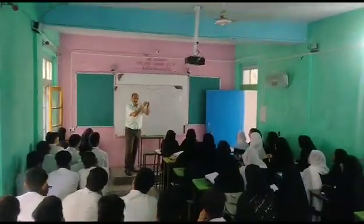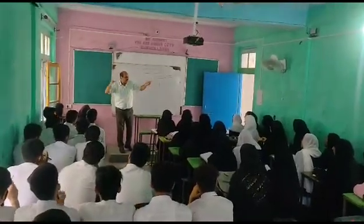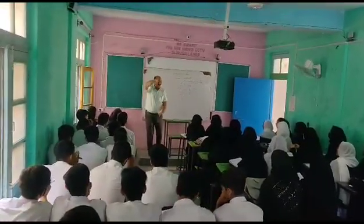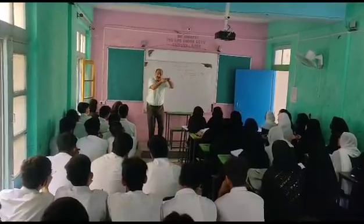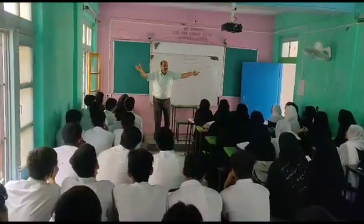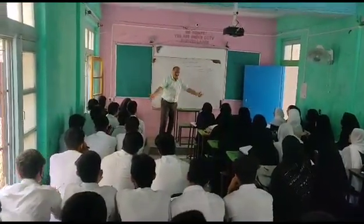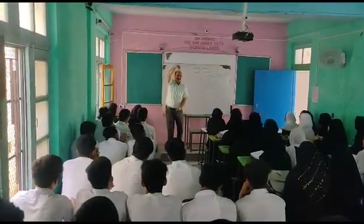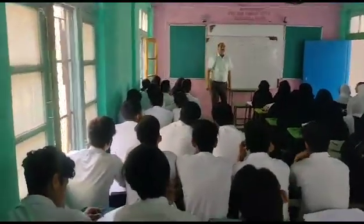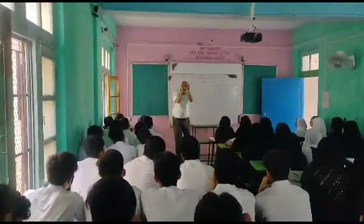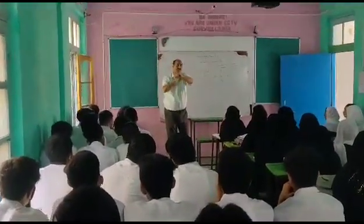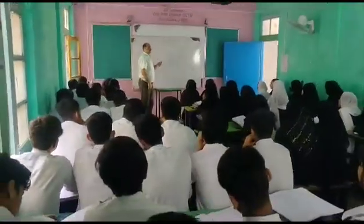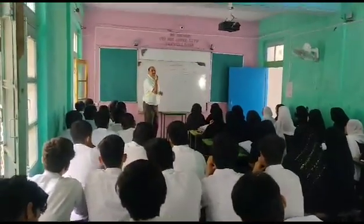The X coordinate lies along the X axis, which is a horizontal line. The Y coordinate lies along the Y axis, which is a vertical line. The meeting point of the axes is called the origin.